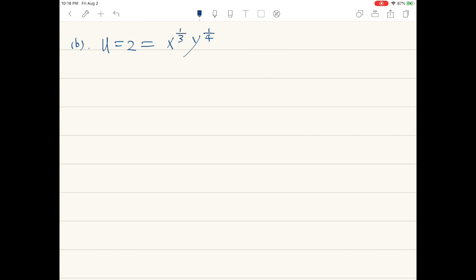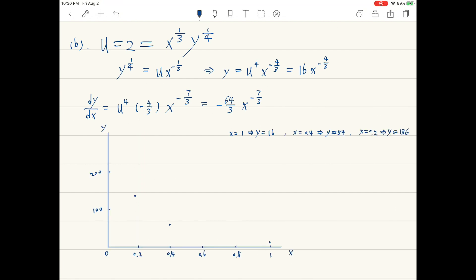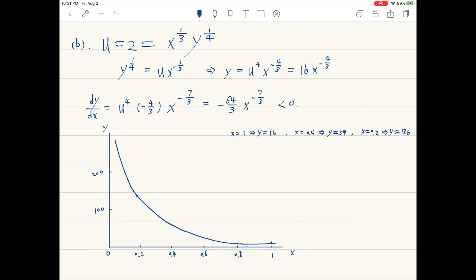For part b, the slope of the indifference curve is called the marginal rate of substitution between x and y. It measures the rate at which the consumer is willing to trade y for x while keeping her utility constant. It has nothing to do with the market prices of the two goods.